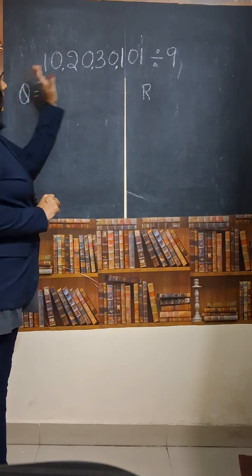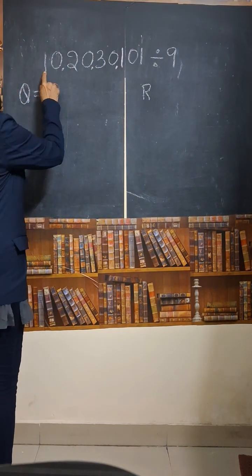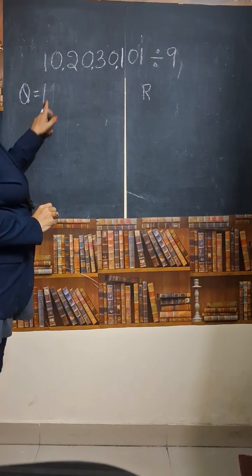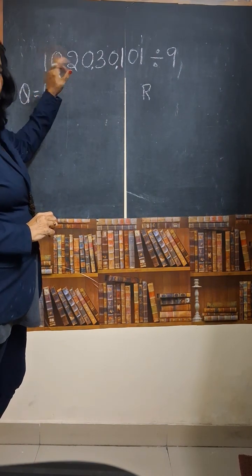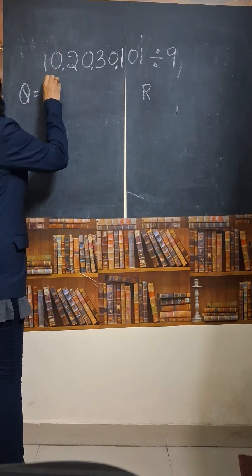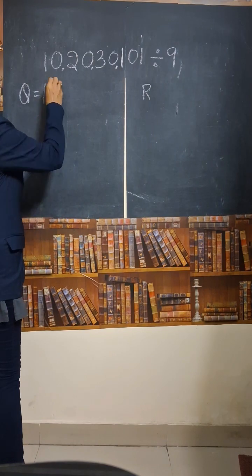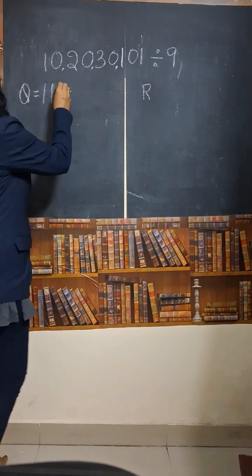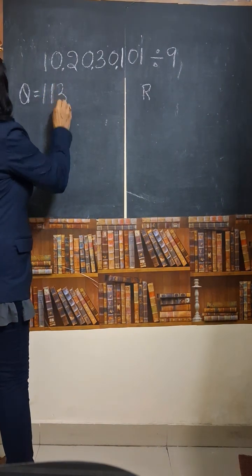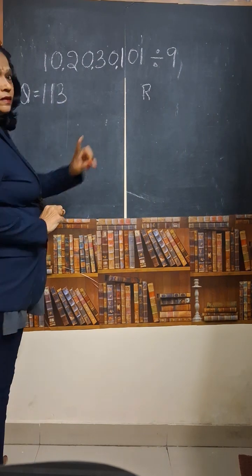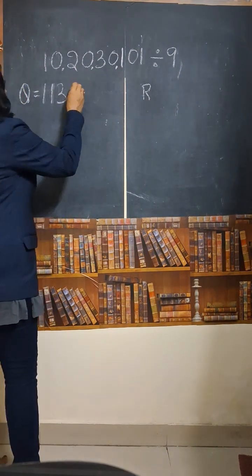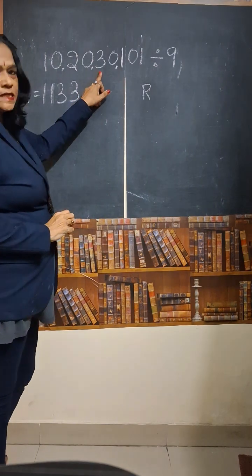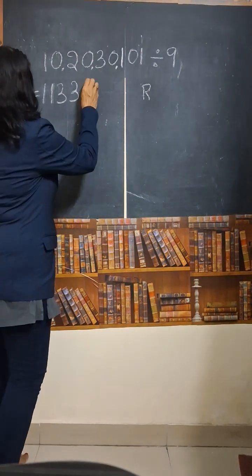What we should do is just addition. The first digit, 1, stays as it is. Add the 1 into the next number: 1 plus 0 is 1. Add this to the next number: 1 plus 2 is 3. Then 3 added to the next number: 3 plus 0 is again 3. Then 3 plus the next number 3: 3 plus 3 is 6.